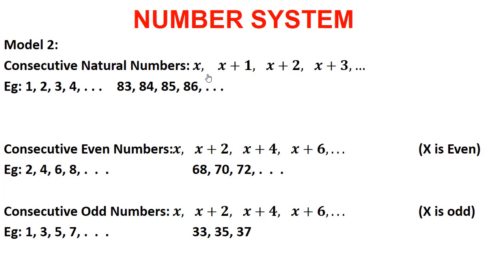If the first number is x, then the second consecutive natural number is x+1, then x+2, then x+3, x+4 and so on. For example, 1, 2, 3, 4 are consecutive natural numbers — they are all in a row without any gap. Similarly, 83, 84, 85 and 86 are consecutive natural numbers. If the first number is x = 83, then x+1 is 84, x+2 is 85, and x+3 is 86.